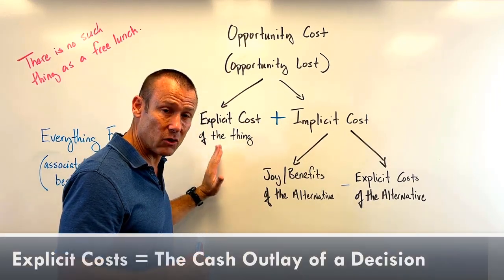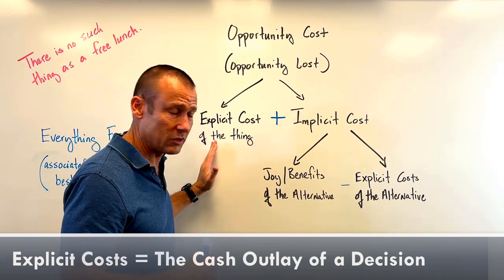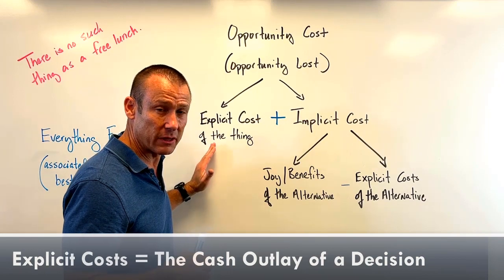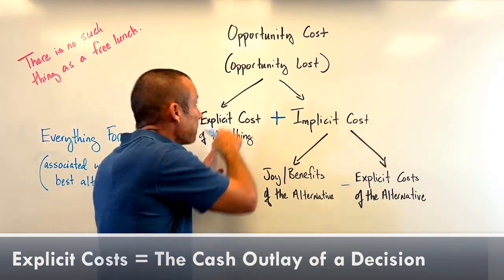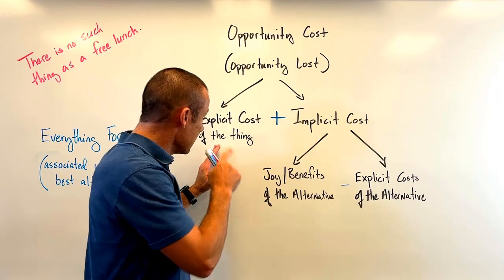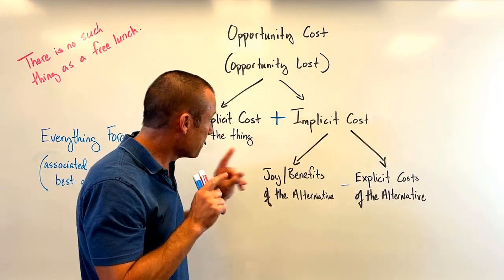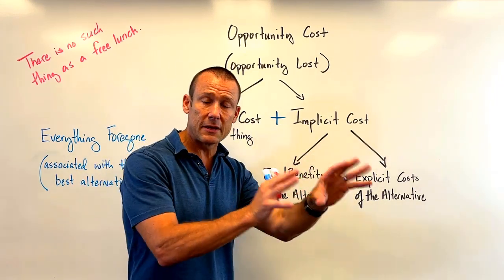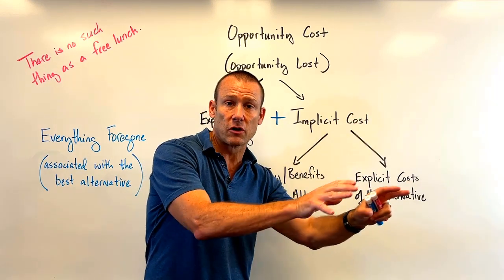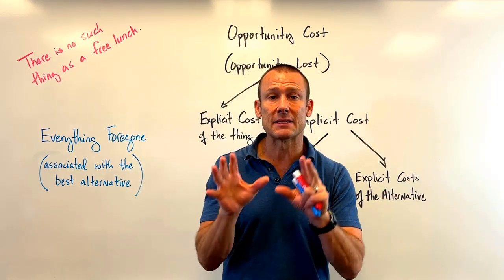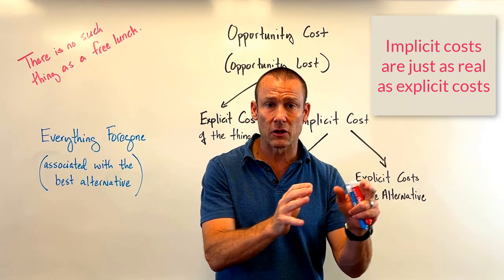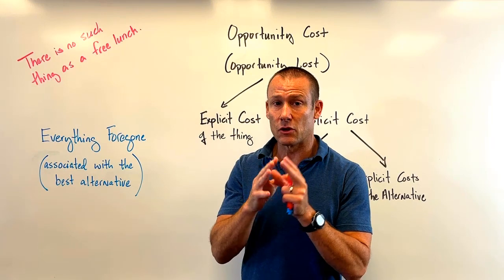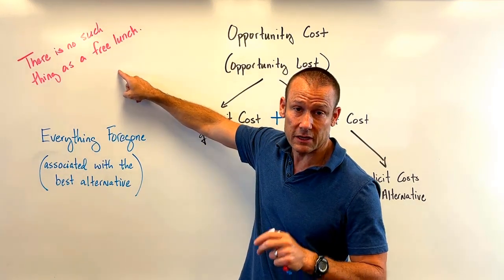Explicit cost is the cash outlay of whatever you're looking at — the one that comes naturally to us. Almost all of us look at the cash outlay of doing something; that's the explicit cost, and it is absolutely part of opportunity cost. But the economist says you must also look at the implicit cost, which has to do with the alternative, because every decision has an alternative.